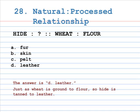Number 28: natural is to processed relationship. Hide is to A. Fur, B. Skin, C. Pelt, D. Leather, as wheat is to flour. The correct answer is D, Leather. Just as wheat is ground to flour, so hide is tanned to leather.